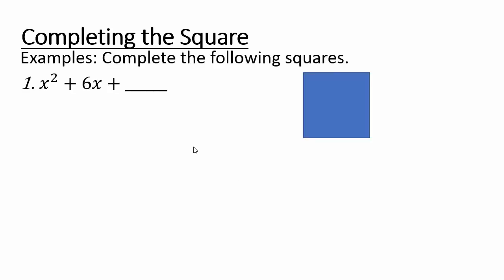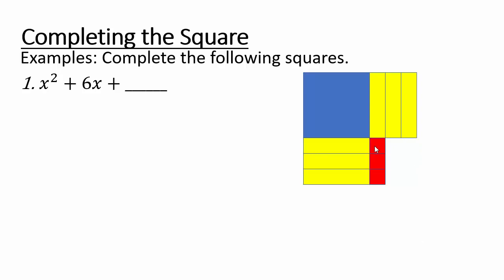Now let's look at completing the square — literally creating a perfect square from a polynomial. Suppose you have x squared plus 6x. Here's x squared as a real square, x by x square units, plus 6x. If you want it to become a perfect square, place the 6x strips — 3 on the top and 3 on the side. To complete the square corner, you add a 3 by 3 grid, which is 9. So half of 6 is 3, and 3 squared equals 9, creating a perfect square.